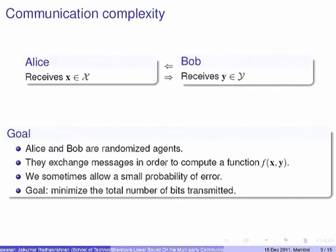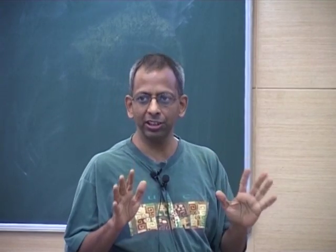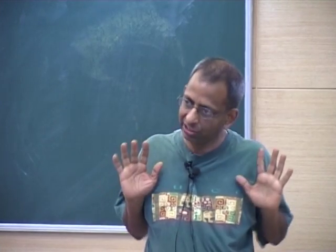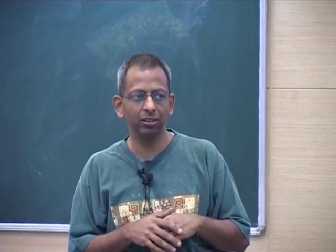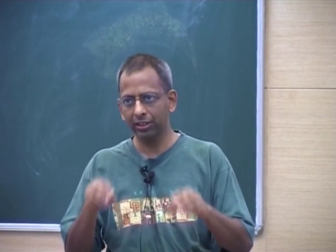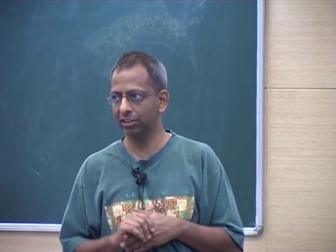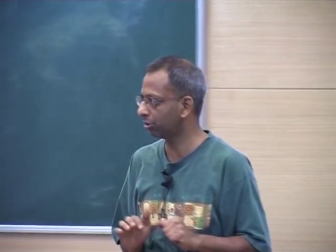Since they are randomized, we allow them some probability of error. The goal is to compute a certain function. They know what their input sets are and they know the function in advance. They come up with a strategy in advance, then the inputs are handed over to them. Based on their initial strategy, they communicate, and in the end they declare the answer. That is the usual communication complexity model.